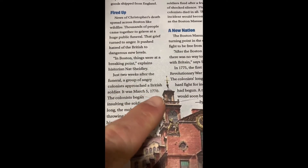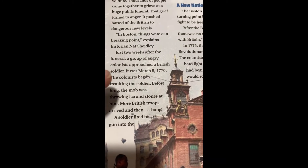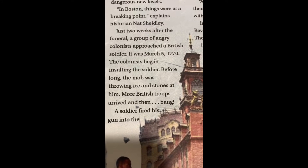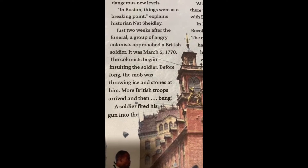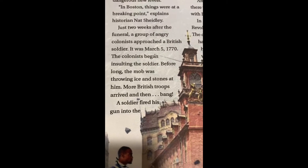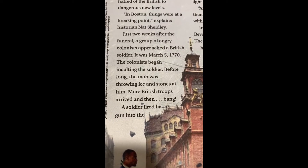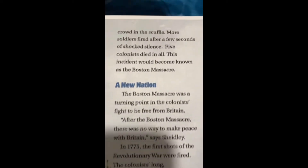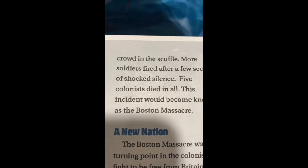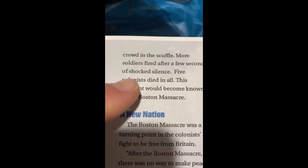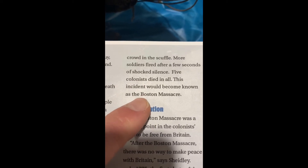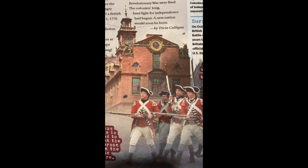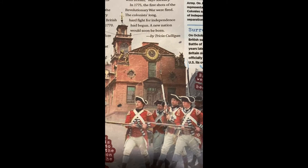We're going to skip ahead a little bit because there's another important date coming up. Just two weeks after Christopher's funeral, a group of angry colonists approached a British soldier. It was March 5th, 1770. The colonists began insulting the soldier, and before long the mob was throwing ice and stones at him. More British troops arrived, and then a soldier fired his gun into the crowd in the scuffle. More soldiers fired after a few seconds of shocked silence. Five colonists died in all. This incident would become known as the Boston Massacre.